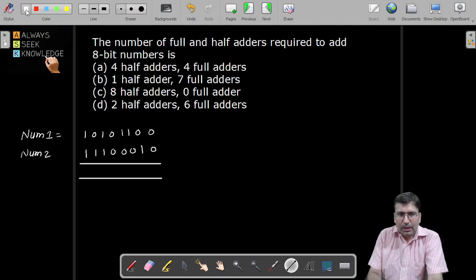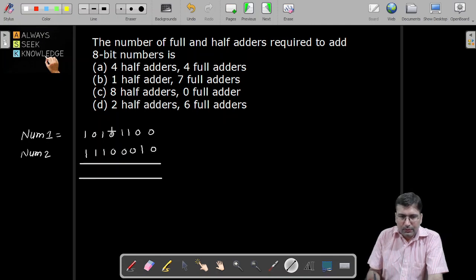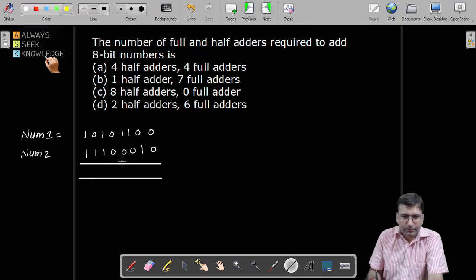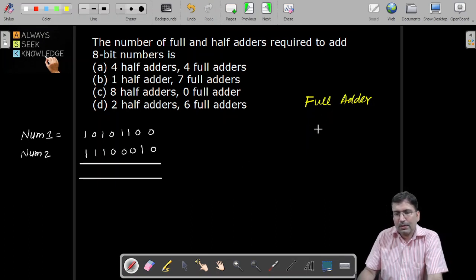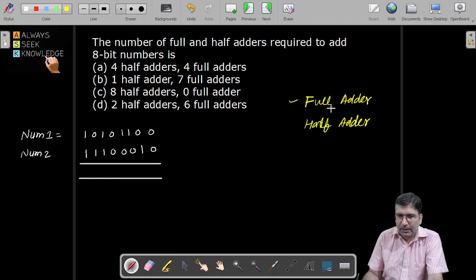One full adder is more capable than half adder. So we can use 8 full adders. But if we compare full adder and half adder, full adder is more capable and it must be costly also. So in cases where we can use half adder, we should go for that.